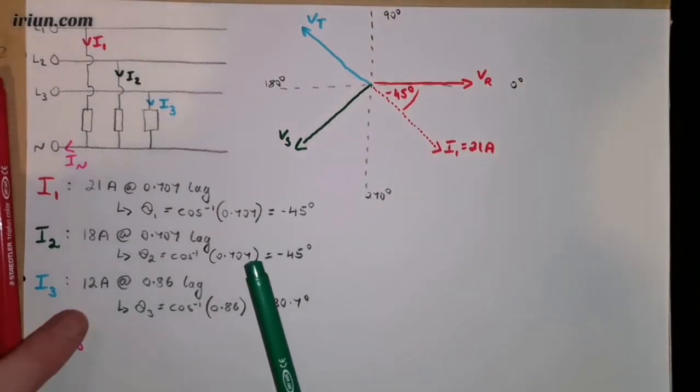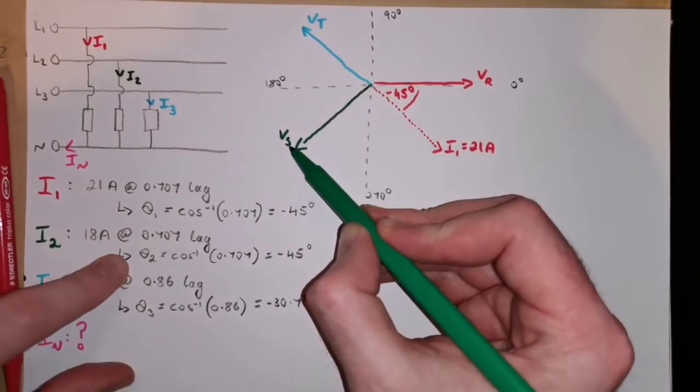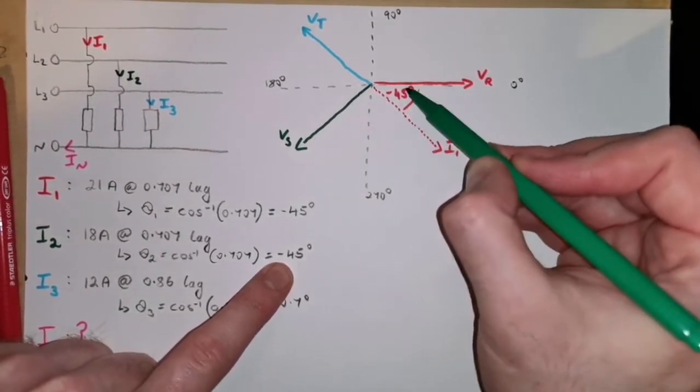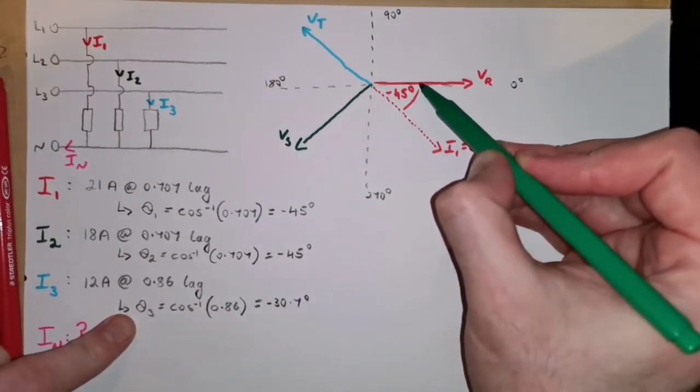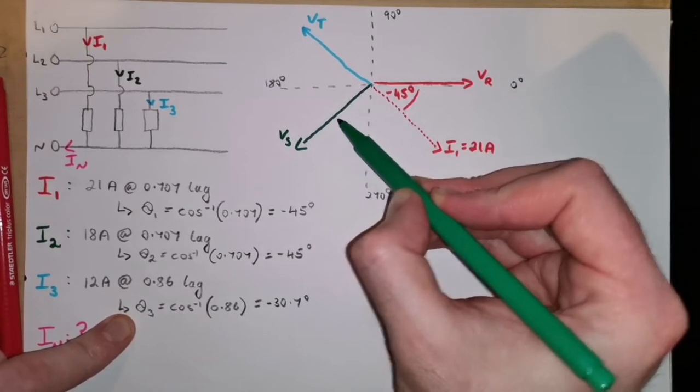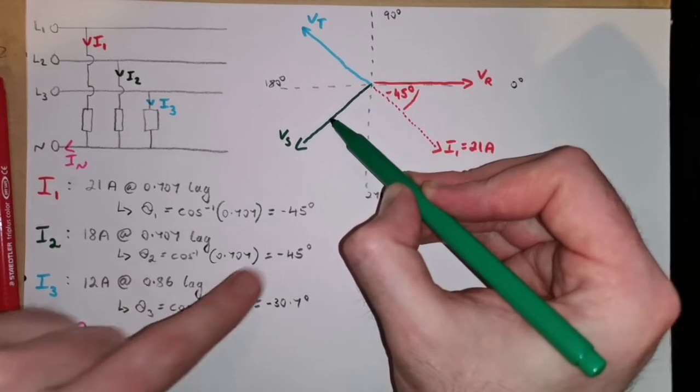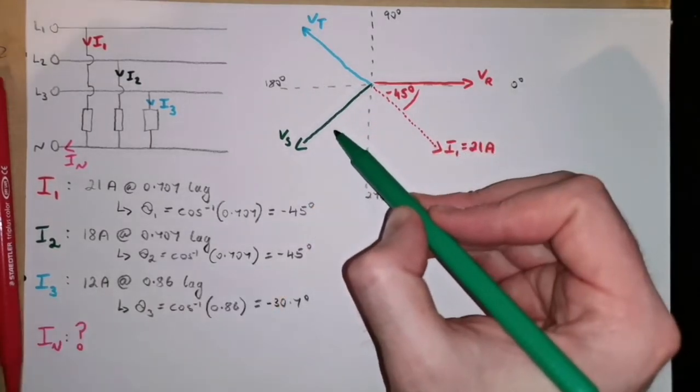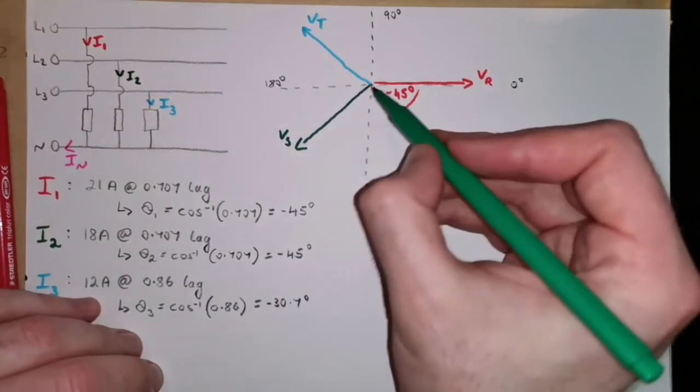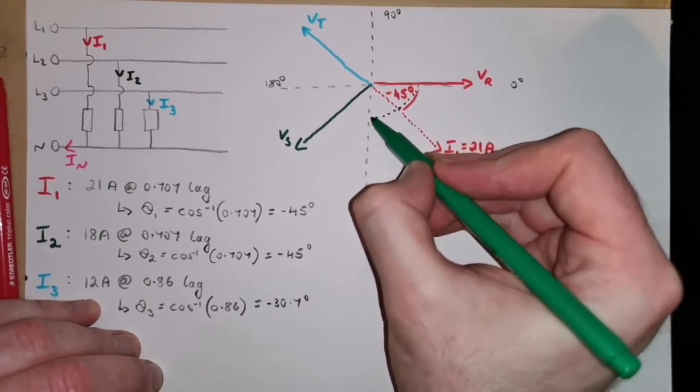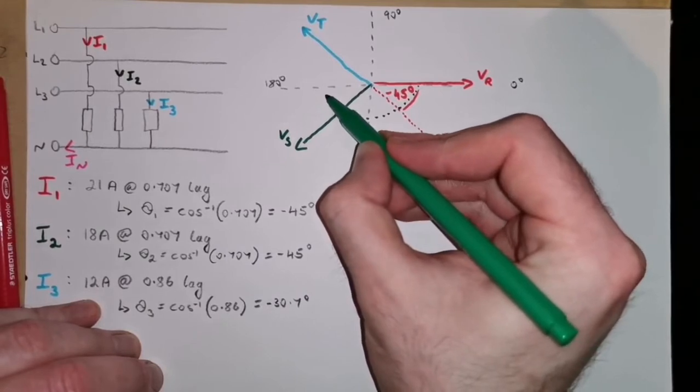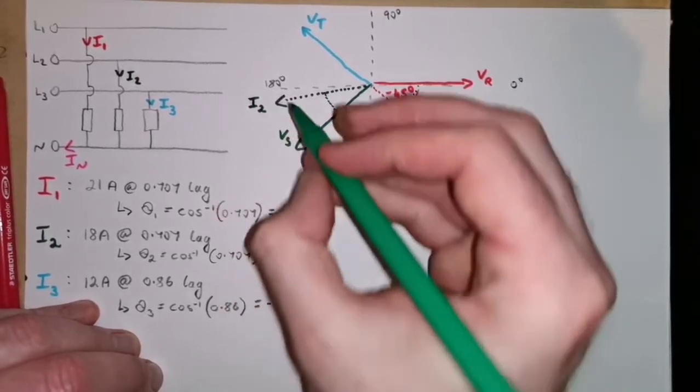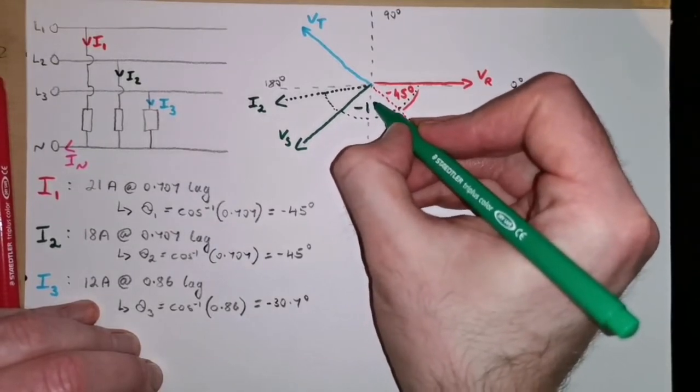Let's do the same for these currents here. I2 is off of Vs. Now, here's the difference. This has been driven by this voltage. So, this angle is relative to this. We know that Vs lags Vr by minus 120 degrees. So, we have to go minus 120 to our voltage, minus another 45 to get the angle of our current. So, that is minus 120, that's minus 165 degrees. So, that's essentially coming back minus 120 to the voltage, minus another 45. So, our I2 is here, and the overall angle for it is minus 165 degrees.